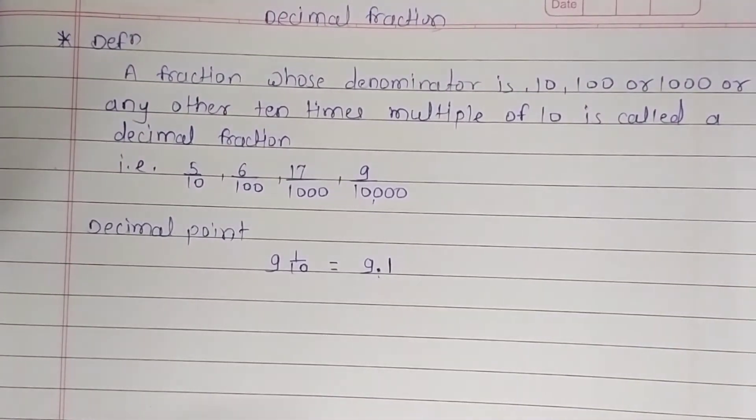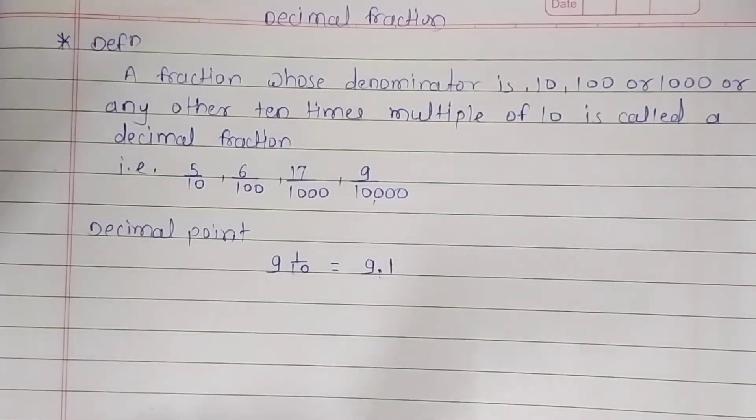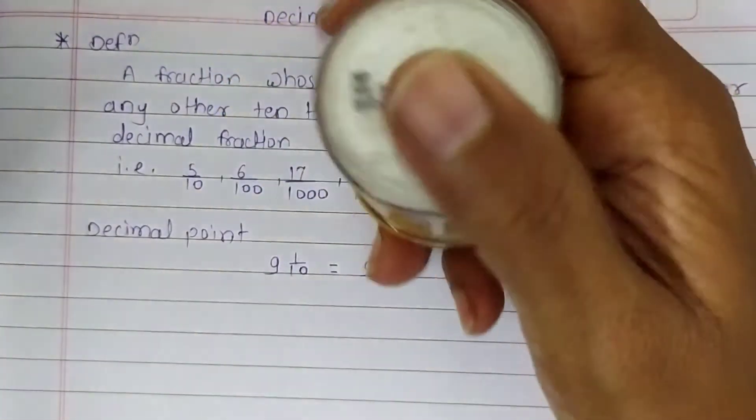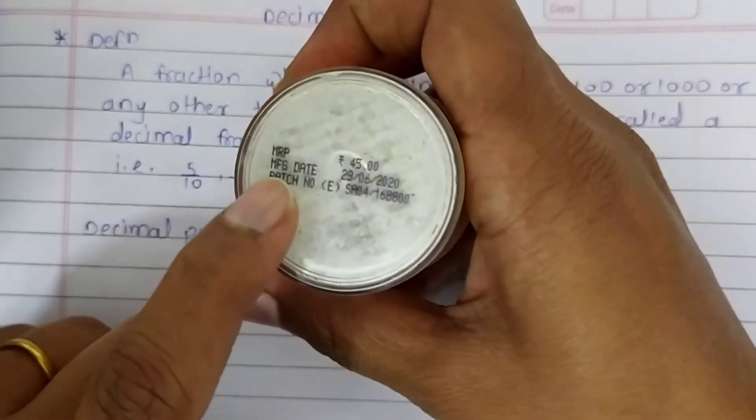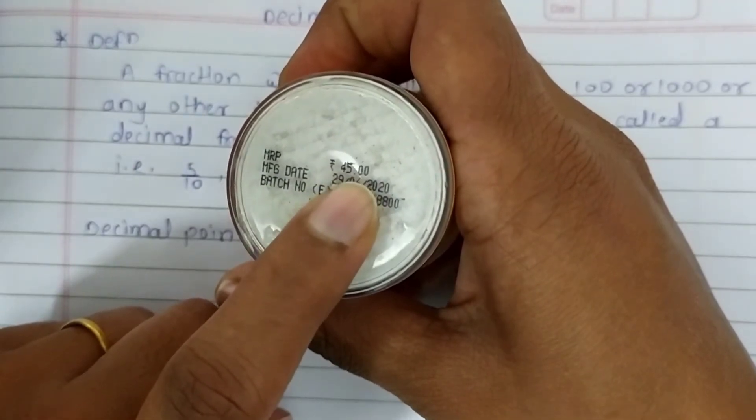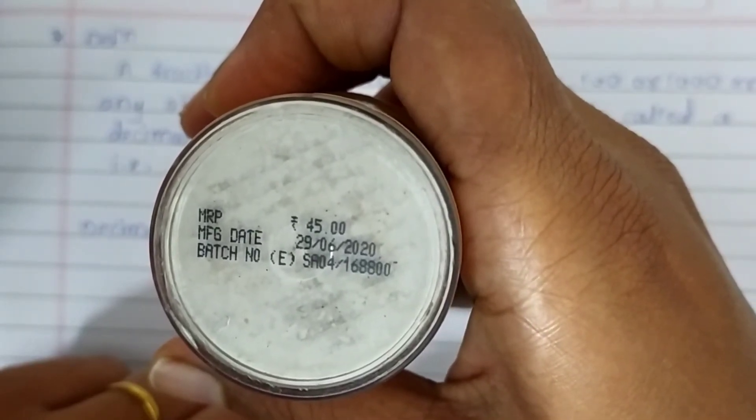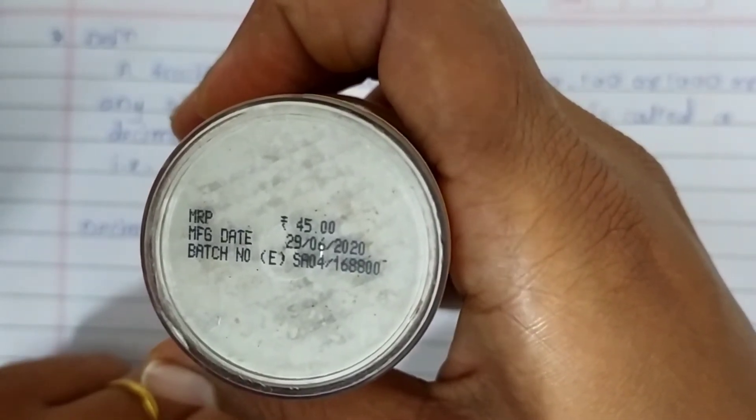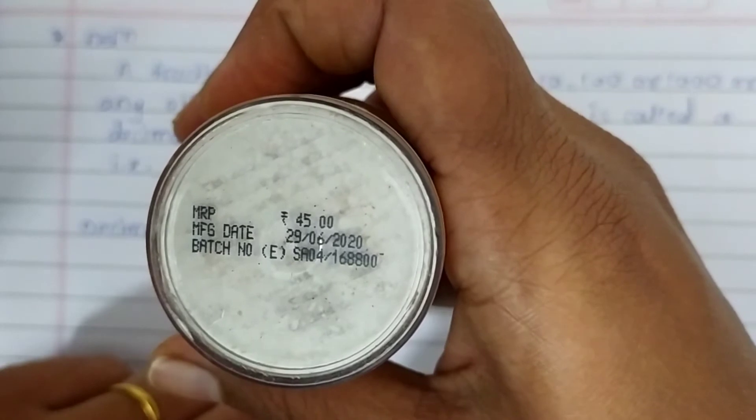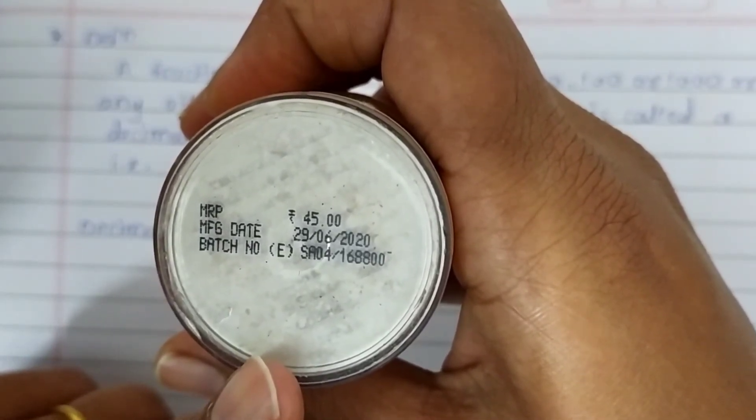We can see the MRP on that product's box or carton. Look here. Here we can see the MRP. MRP is Rs. 45.00. You can see here a point, a small dot. A tiny dot is called a point. So the MRP for this bottle is Rs. 45.00.